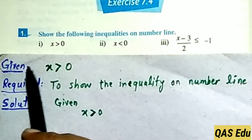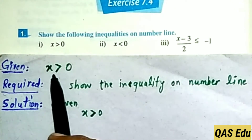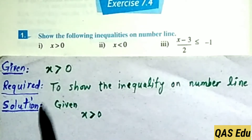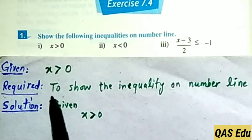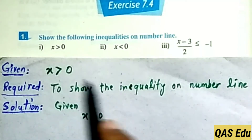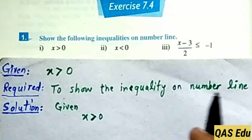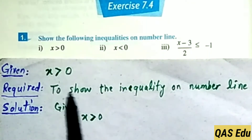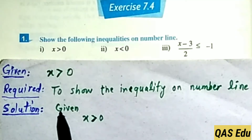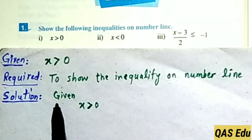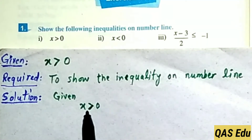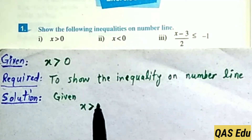Part 1: We are given x is greater than 0. We need to show this inequality on the number line. Solution: we are given x is greater than 0, meaning x is any number greater than 0.